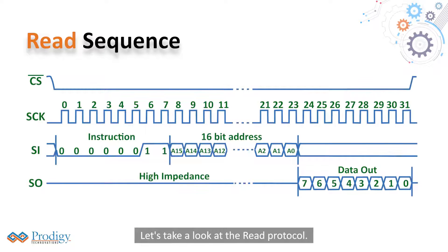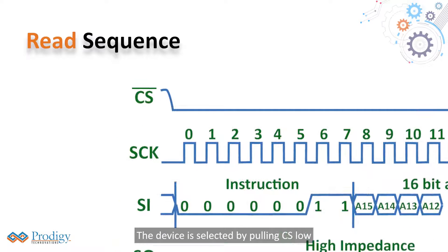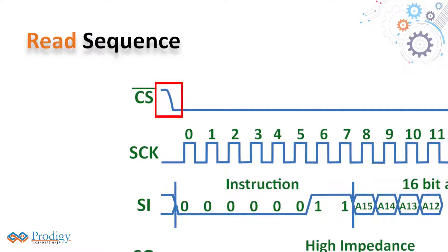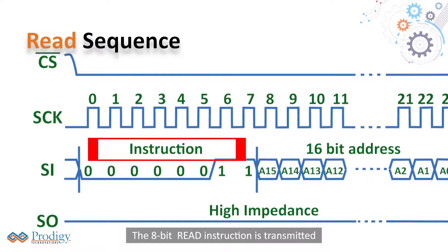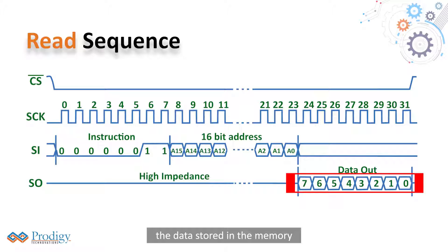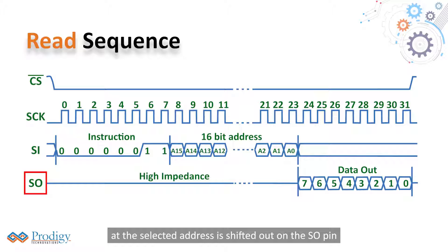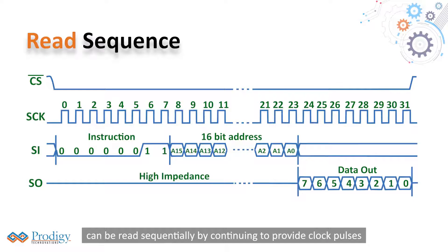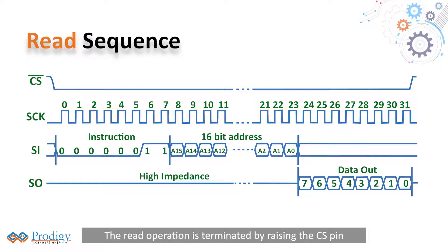Let's take a look at the read protocol. The device is selected by pulling CS low. The 8-bit read instruction is transmitted to the EEPROM followed by the address. After the correct read instruction and address are sent, the data stored in the memory at the selected address is shifted out on the SO pin. The data at the next address can be read sequentially by continuing to provide clock pulses. The read operation is terminated by raising the CS pin.